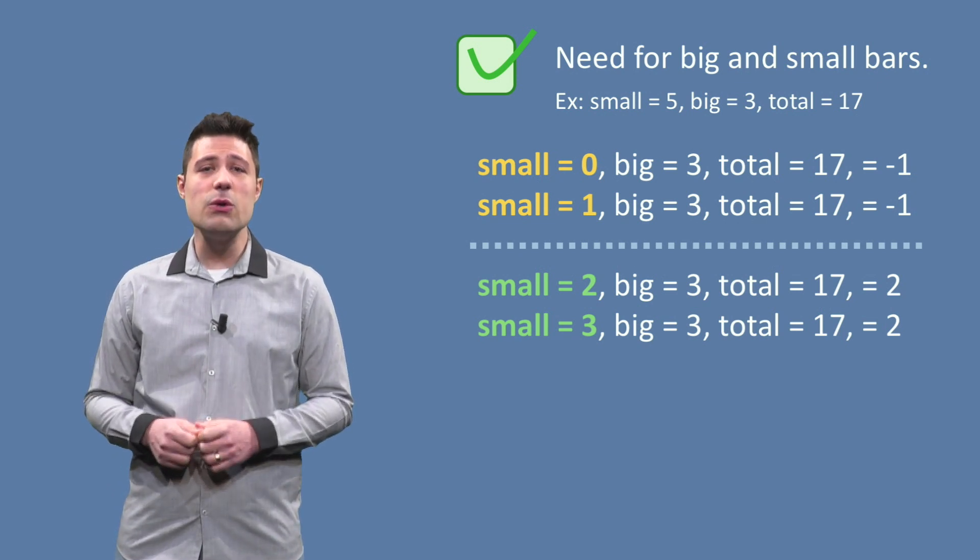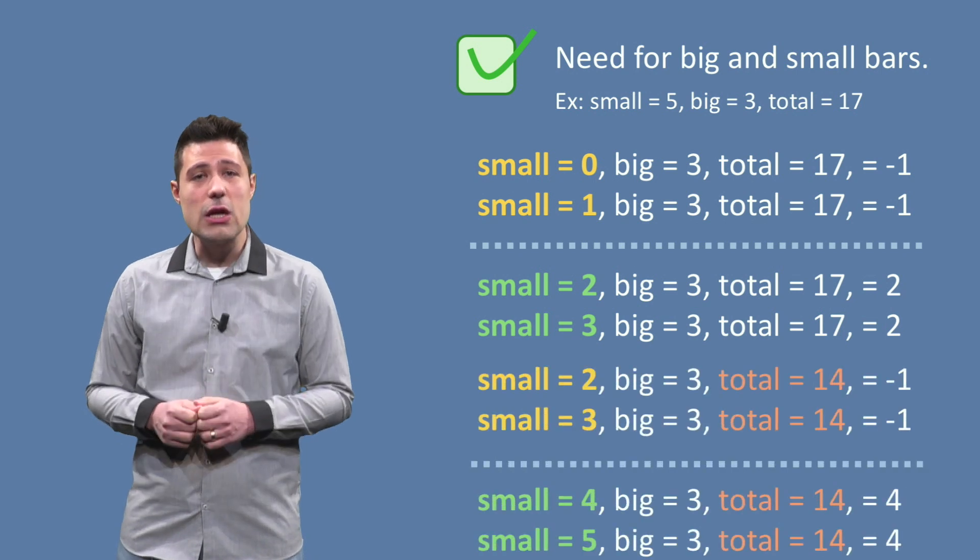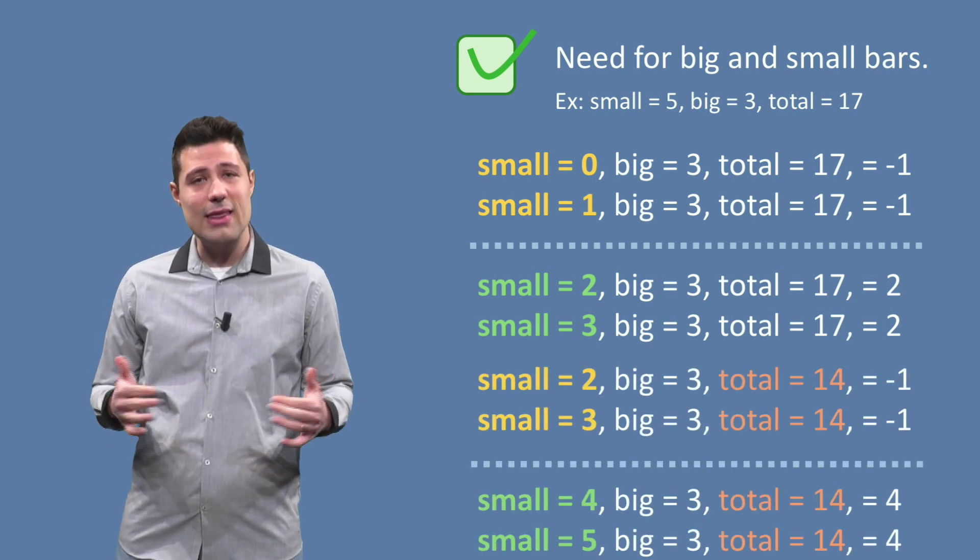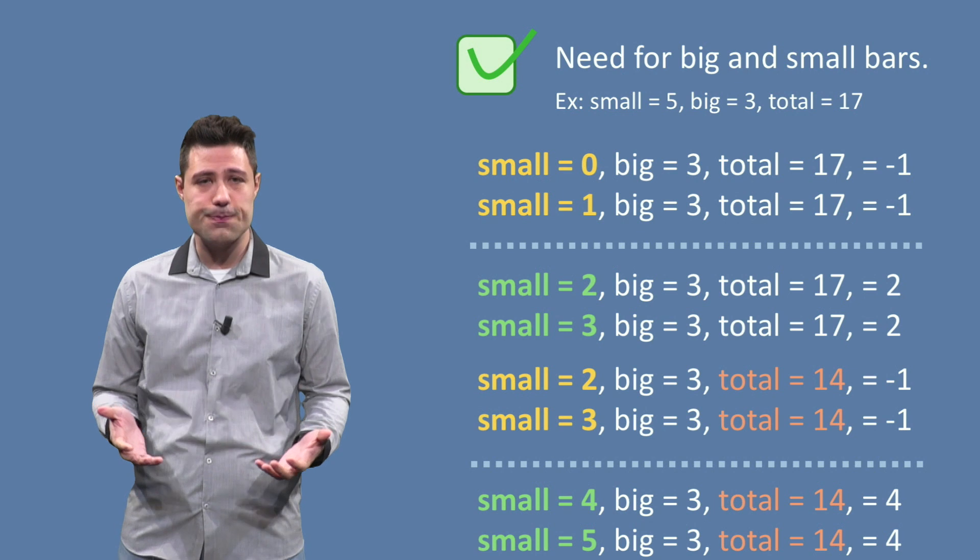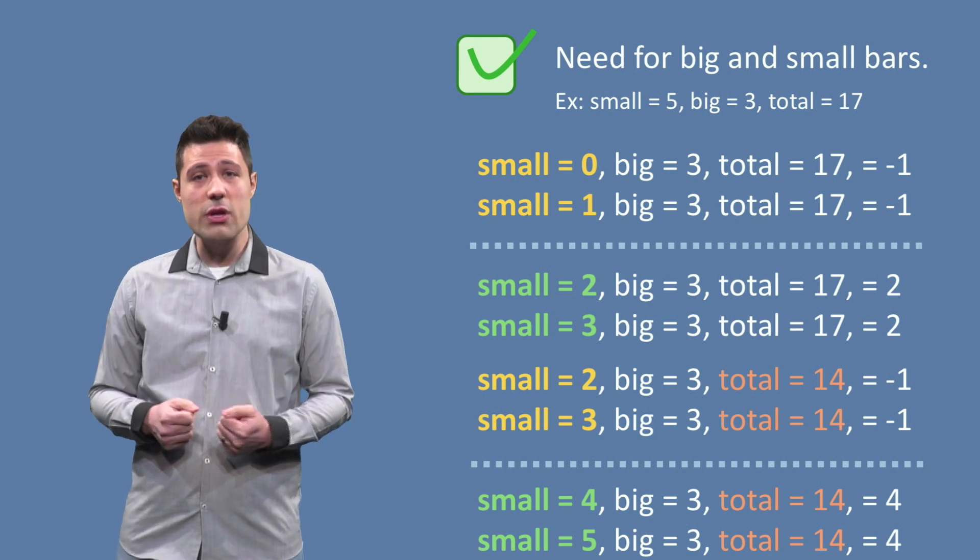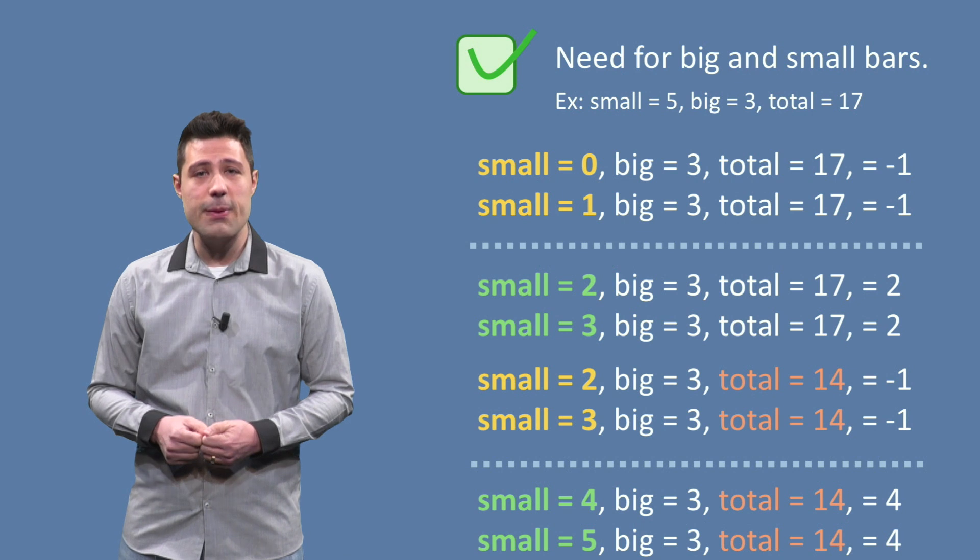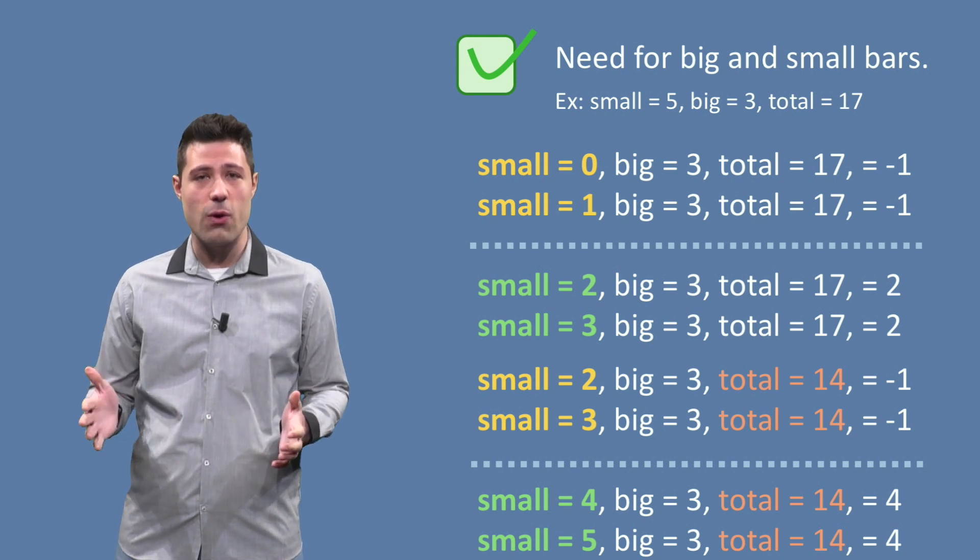You can partially use the big bars, meaning not using all of them and then complement with small bars. If we have total equals 14, for example, the boundary happens when small is between 3 and 4.